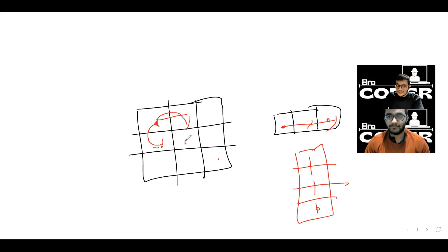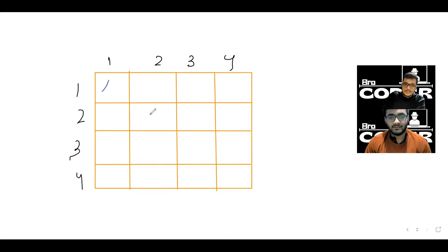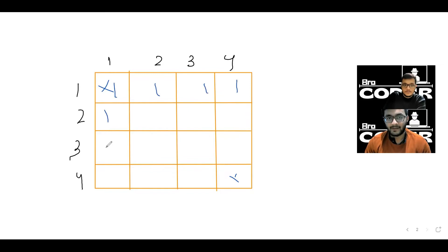So this is the DP. I made a 4x4 DP table. You will start here and have to come here. So how do you initialize the base case? The base case will be constant — if we have only one row or one column, we fill the first row and first column all with ones: one, one, one, one.